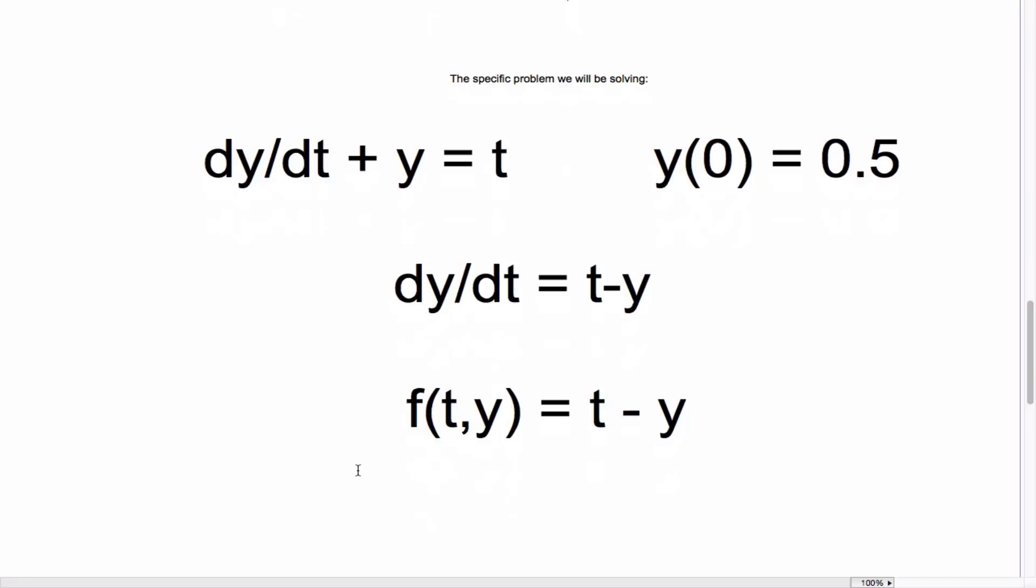The specific problem that we'll be solving is the simple first-order linear differential equation dy/dt + y = t with initial condition y(0) = 0.5. Now, first, we solve for dy/dt to determine the slope function, which is f(t,y) = t - y.